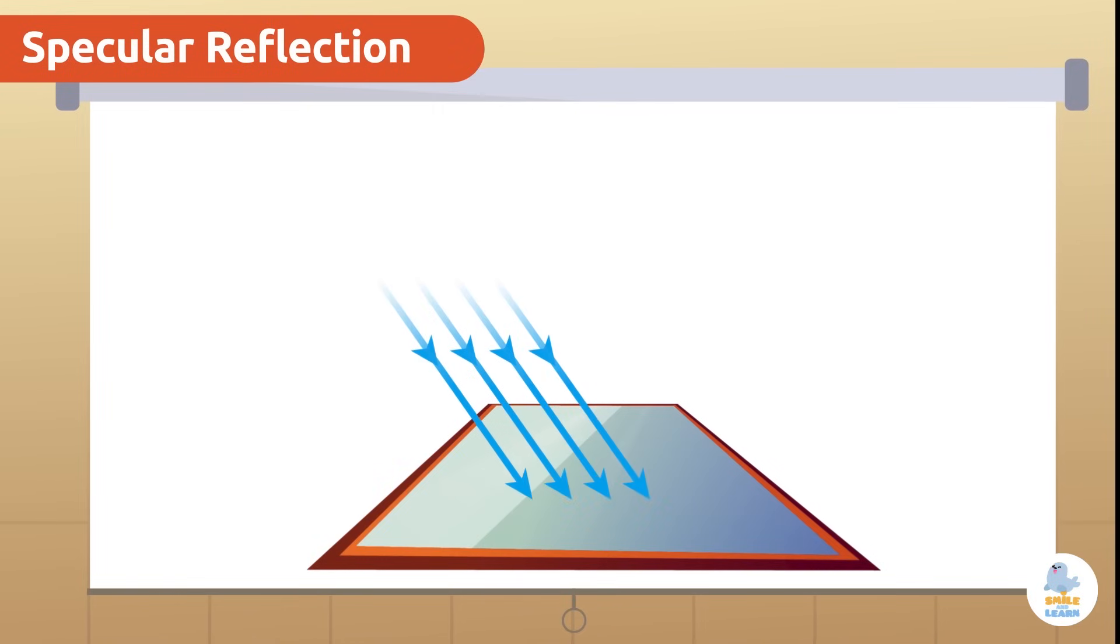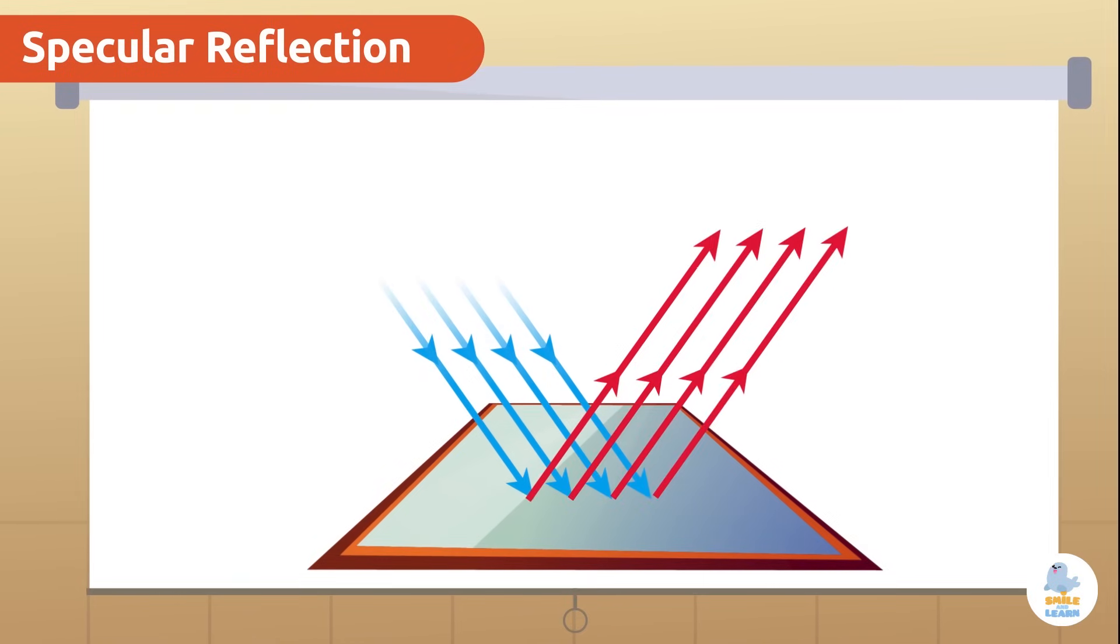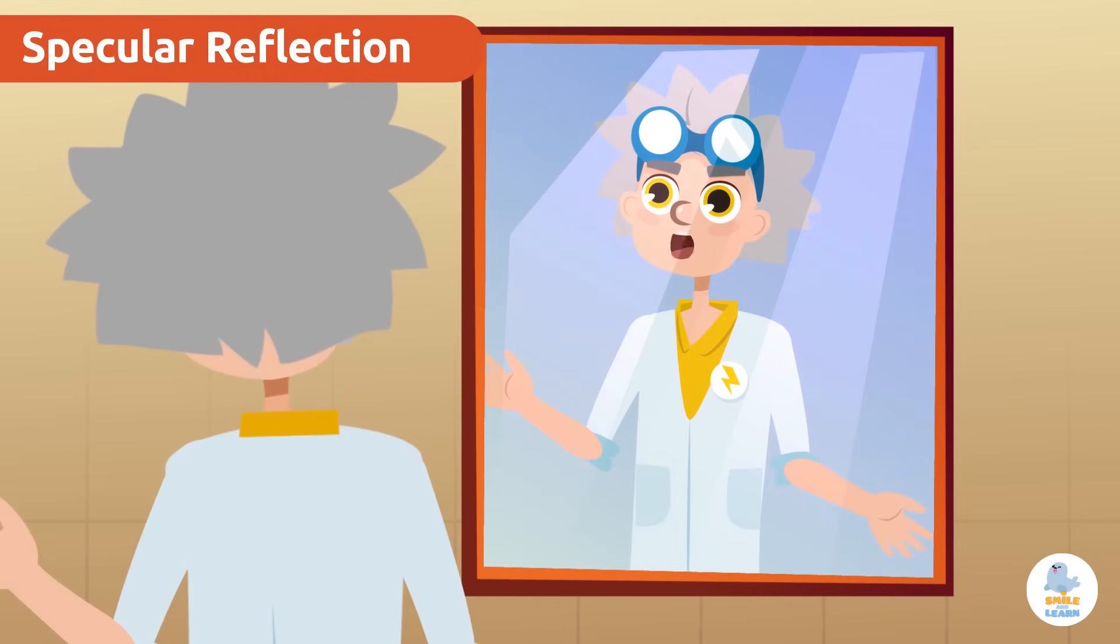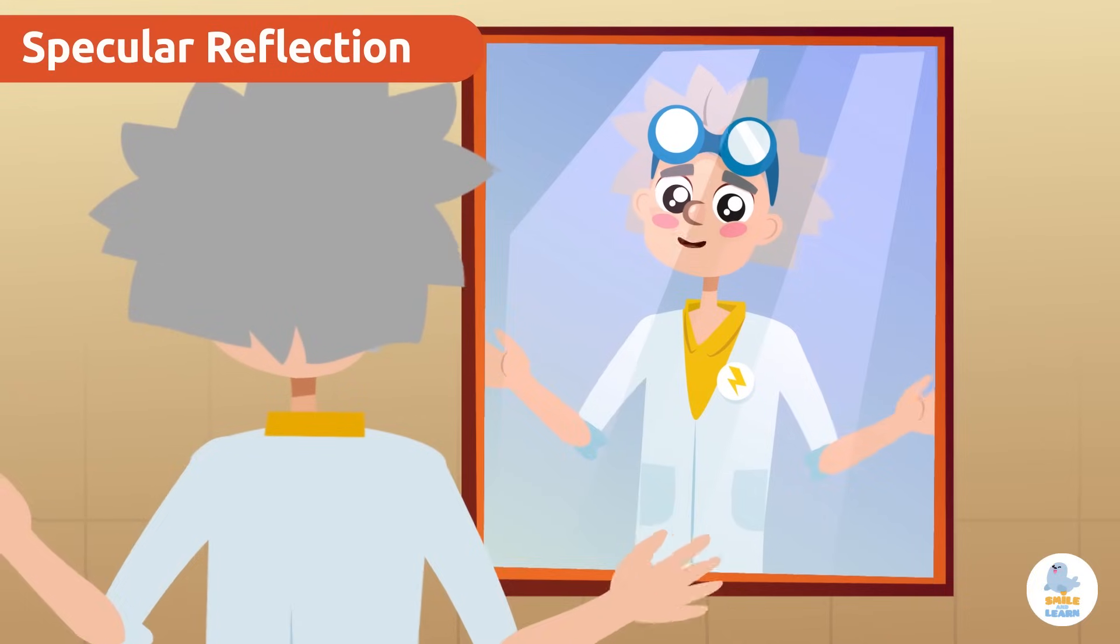When every incident ray is reflected in the same direction, specular reflection occurs. This property allows us to see ourselves reflected in a mirror or shiny surface. I look great today! Hahaha!